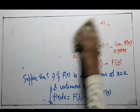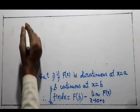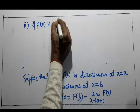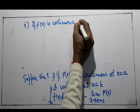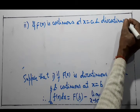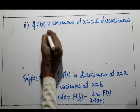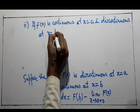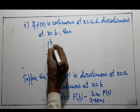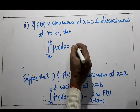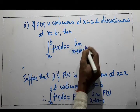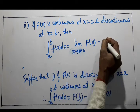If f(x) is continuous at x = a and discontinuous at x = b, then for the integral ∫(a to b) f(x) dx, since f is discontinuous at b, we take the left-hand limit at b. At a, since f is continuous, we use the direct value of the function.